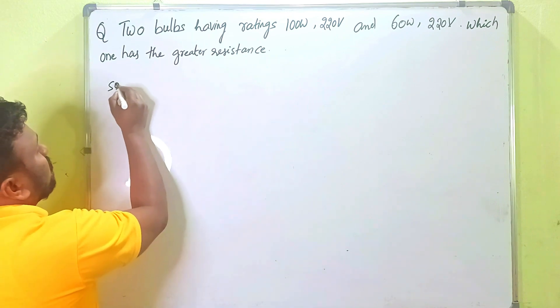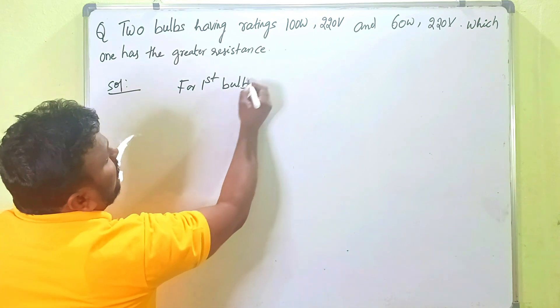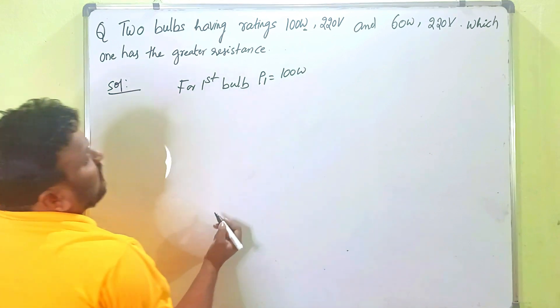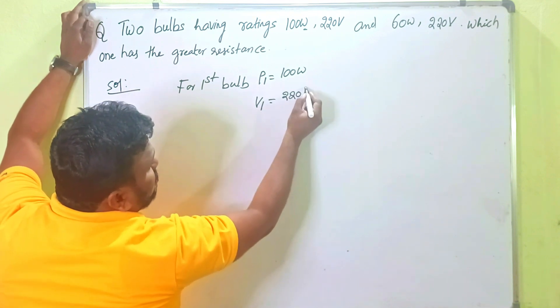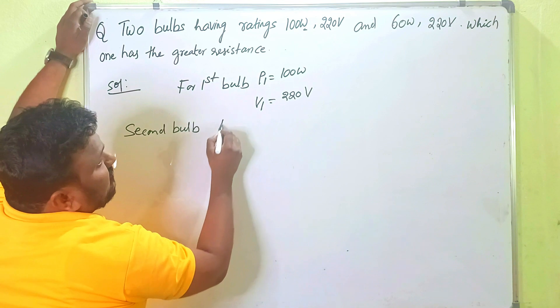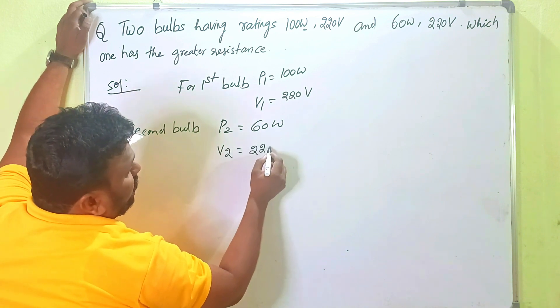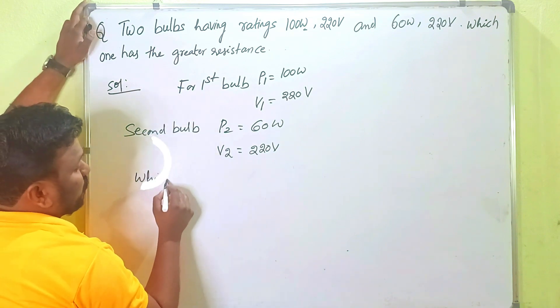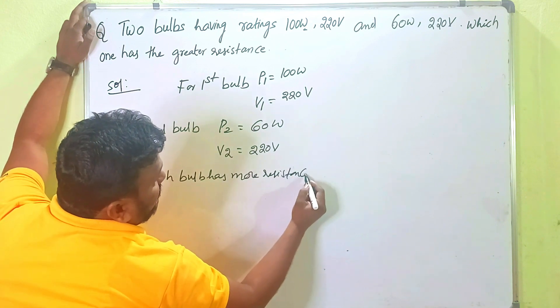So here, the first bulb is given. For first bulb, 100 watts. What is the unit of power? That's watt, right? P1 is equals to 100 watts and similarly its voltage V1, voltage across the first bulb is 220 volts. And similarly for second bulb, how much power is given? 60 watts. And what is the voltage across the bulb? 220 volts. Now what we have to find out among these two bulbs? Which bulb has more resistance? That is what we have to find out.